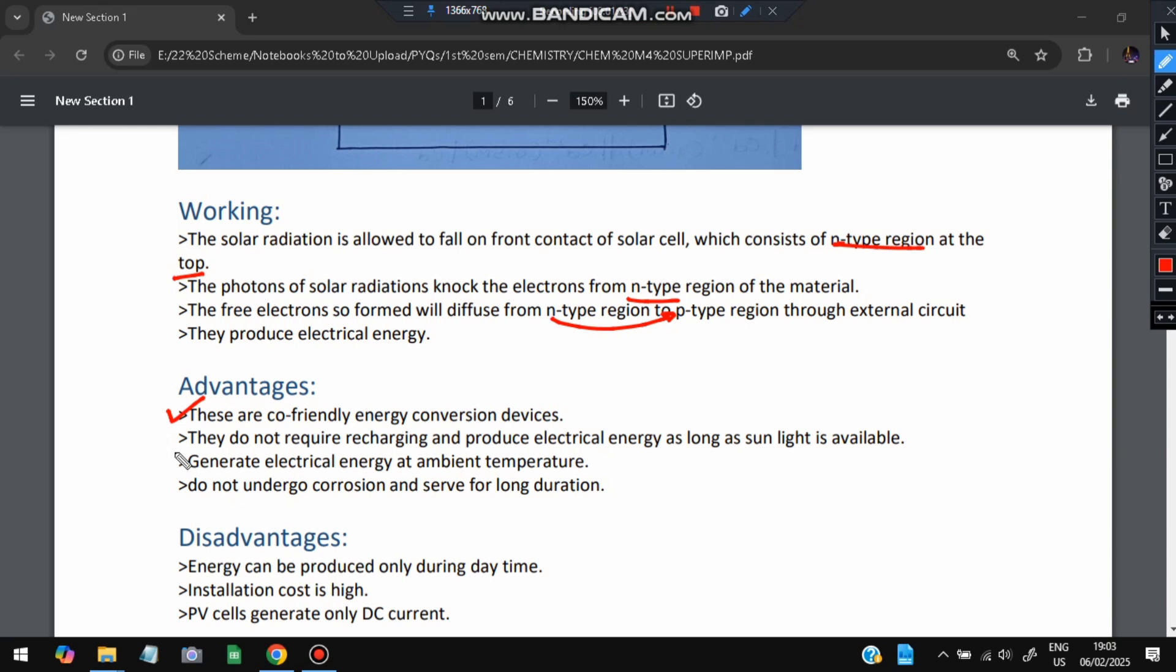Advantages: these are eco-friendly devices and do not require recharging. They generate electrical energy at ambient temperature and do not undergo corrosion and serve for longer duration. Disadvantages: it can only be produced during daytime and installation cost is high. PV cells generate only DC current, not AC current.